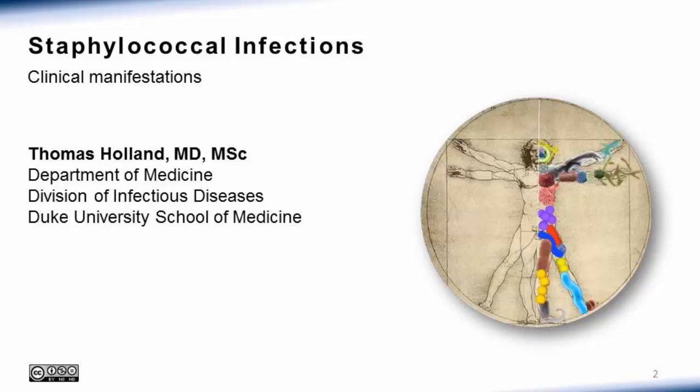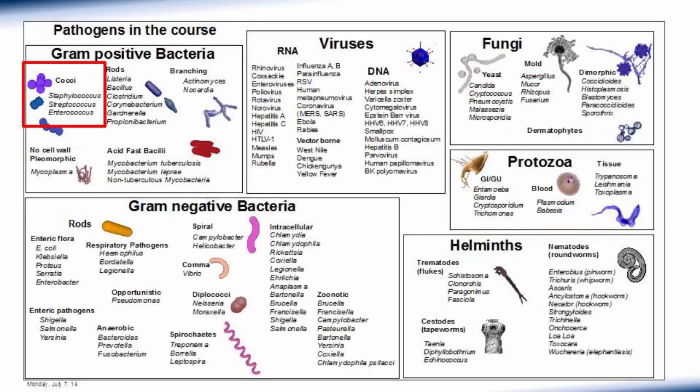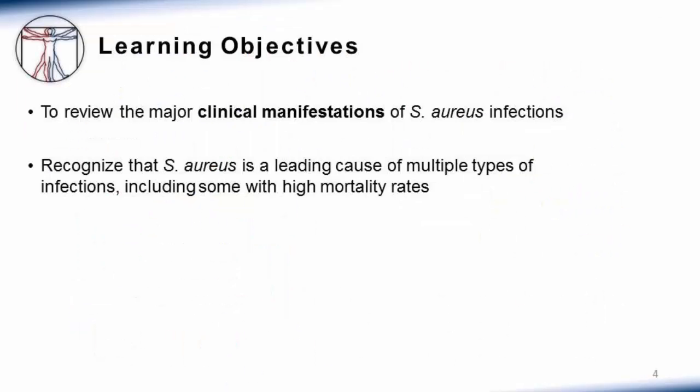In the next few minutes, I'll talk about manifestations of staph infections with the focus on staph aureus clinical manifestations. We're here in the upper left corner in the gram-positive cocci realm of the universe. I want to review the major clinical manifestations of staph aureus infections. You need to recognize that staph aureus is a leading cause of multiple types of infections, including some with high mortality rates. Whatever branch of medicine you go into, you will encounter this pathogen repeatedly in your career.